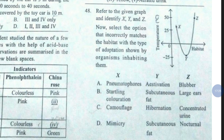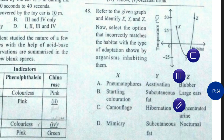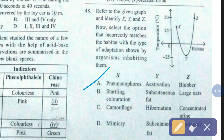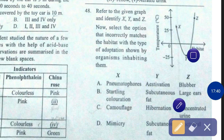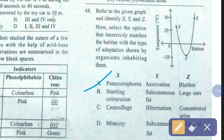Question number 48. Refer to the given graph and identify X, Y and Z. Select the option that incorrectly matches the habitat with the type of adaptation shown by organism inhabiting them. The correct answer is option number A — X: pneumatophores, Y: estivation, Z: blubber.